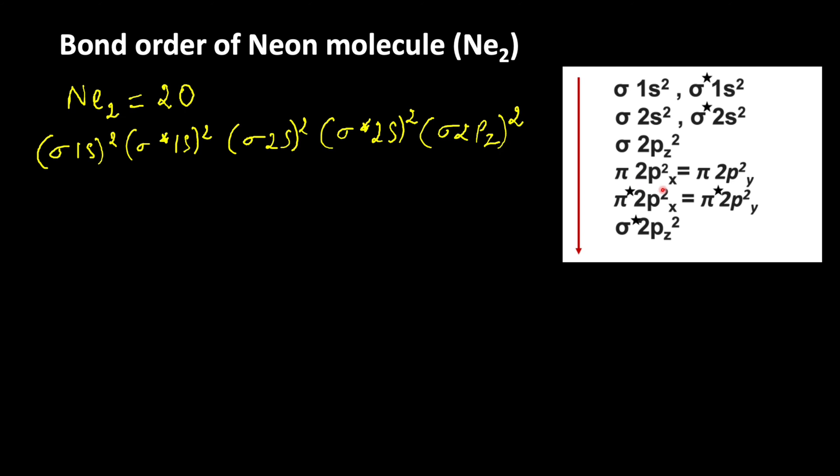The energy of pi 2px and pi 2py orbitals are same. After filling sigma 2pz orbital, now electron enters into pi 2px and pi 2py orbitals. Pi 2px2, pi 2py2, then the electron enters into pi star 2px2, then pi star 2py2, then sigma star 2pz2.